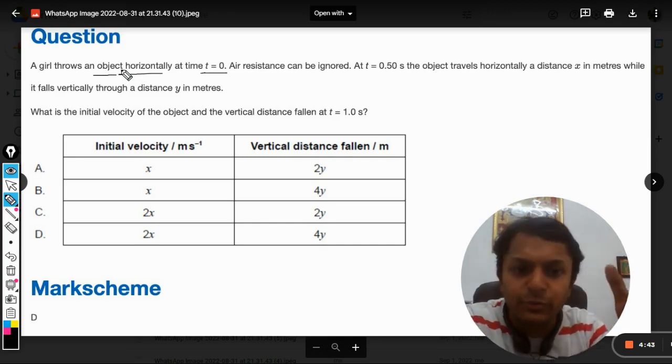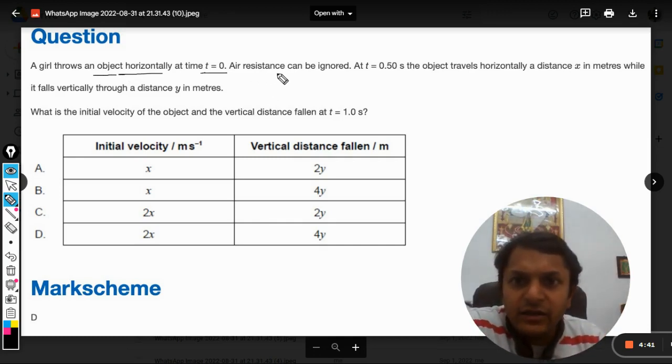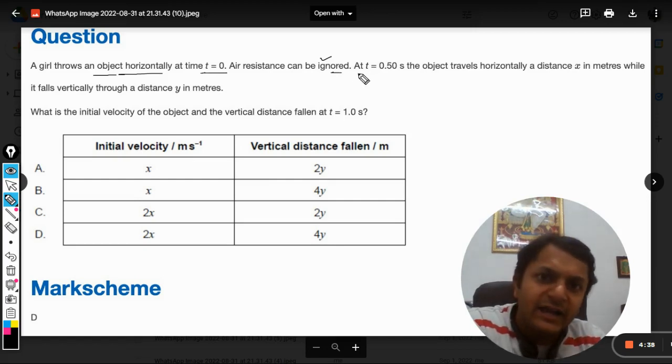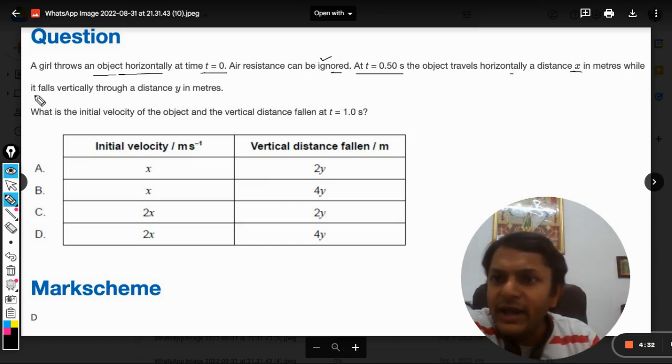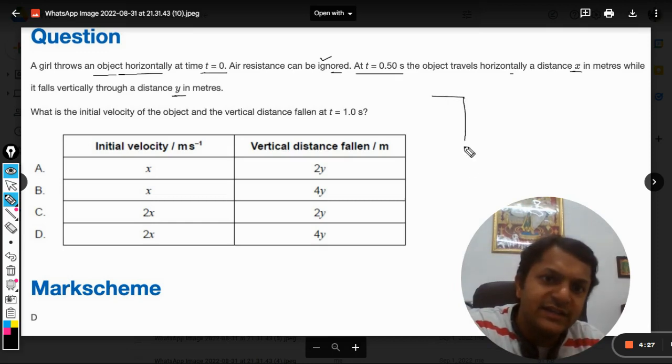Air resistance can be ignored - very important. At t equals 0.5 seconds, the object travels horizontally a distance x while it falls vertically through a distance y. So let us see what is given in the question.